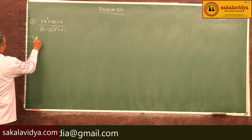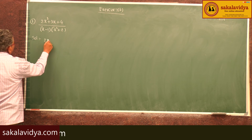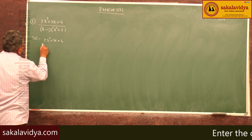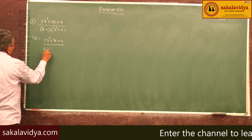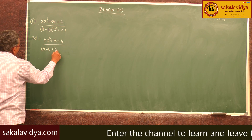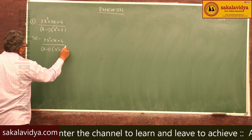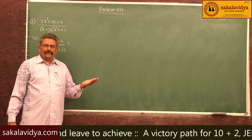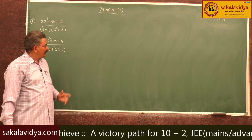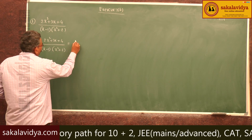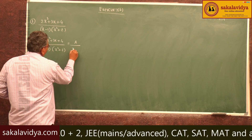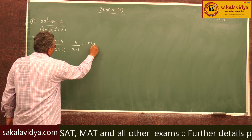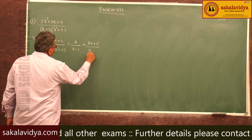For (2x² + 3x + 4) / [(x - 1)(x² + 2)], we have to apply rule number 1 and rule number 3. For (x - 1) there will be a partial fraction A/(x - 1), and for (x² + 2) that is (Bx + C)/(x² + 2).